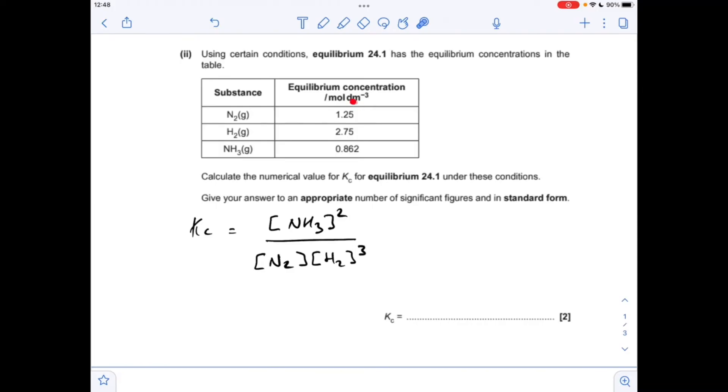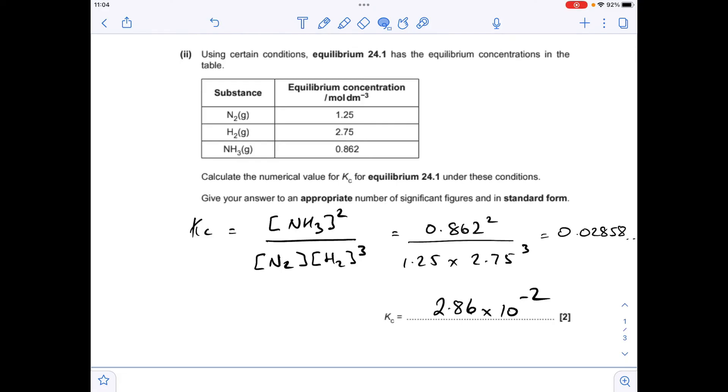So all we need to do is sub in these numbers here, because these are the equilibrium concentrations. So that's coming out at this calculated value here, but the final answer needs to be to an appropriate number of significant figures. So that's going to be 3, because all the data is to 3 significant figures, and we've got to put it in standard form. So it's 2.86 times 10 to the minus 2.